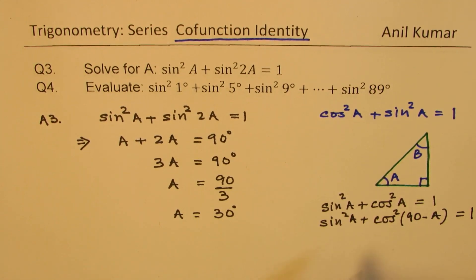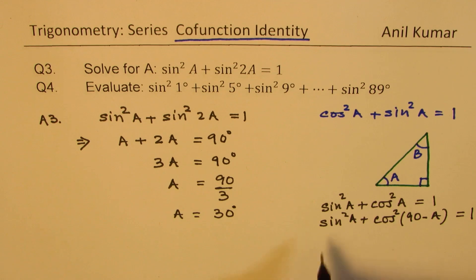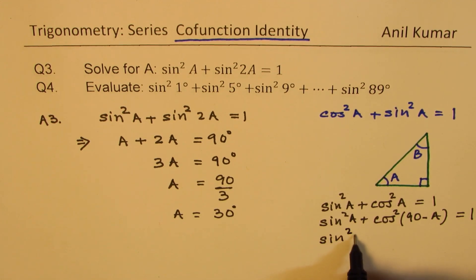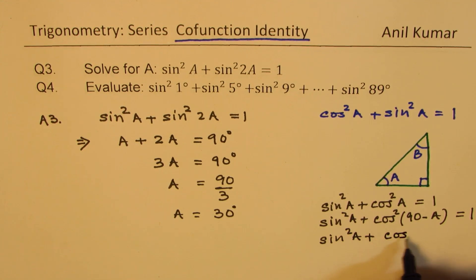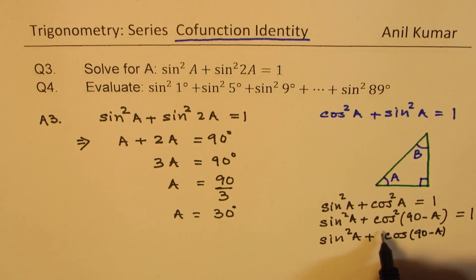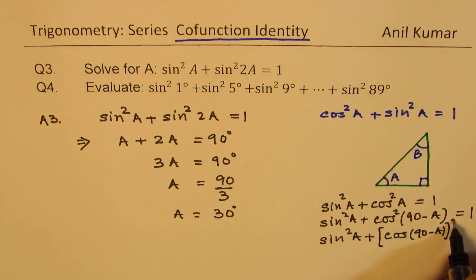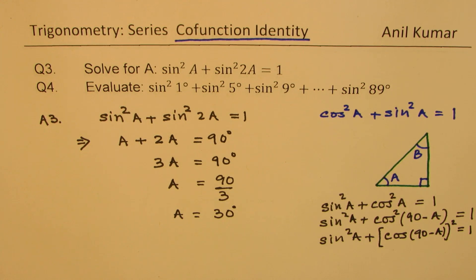So we could write this as sine square a plus cos square of (90 minus a) equals 1. We can write it as sine square a plus cos of (90 minus a), squared. Now, cos of (90 minus b) — since a equals 90 minus b in this right angle triangle — gives us the co-function relationship.